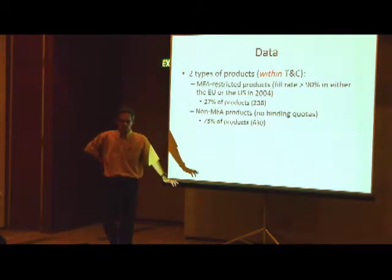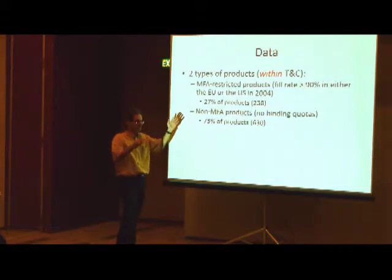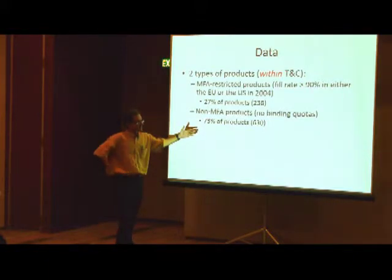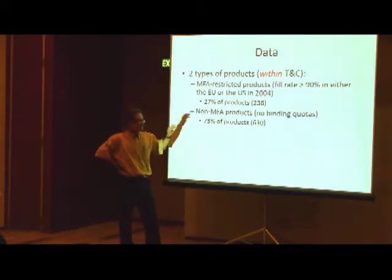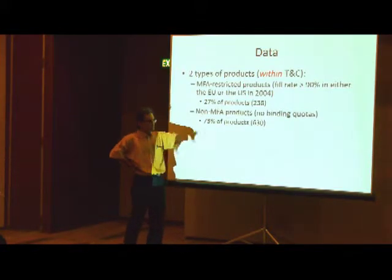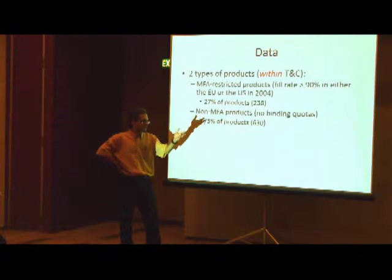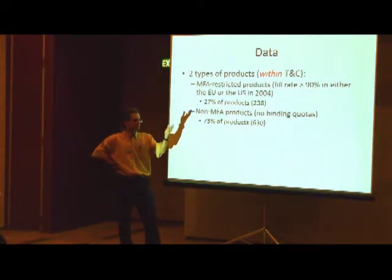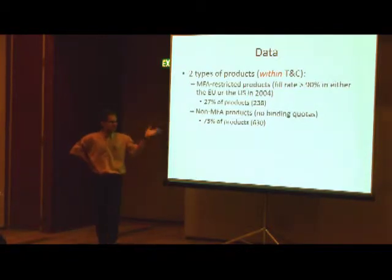Most of the time what we do is simply bundle them together — all of them — and think of two markets: the US and Canada, and the rest of the world. We also have regressions restricting the rest-of-the-world sample to developed economies that have no quotas of their own — basically Japan, New Zealand, and Australia — countries that were developed but didn't have any quotas.